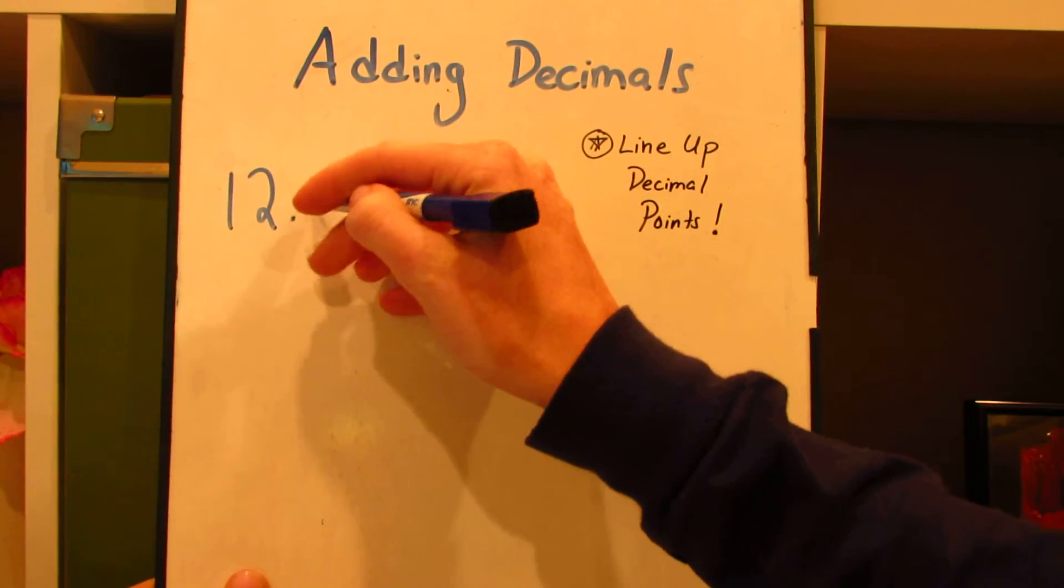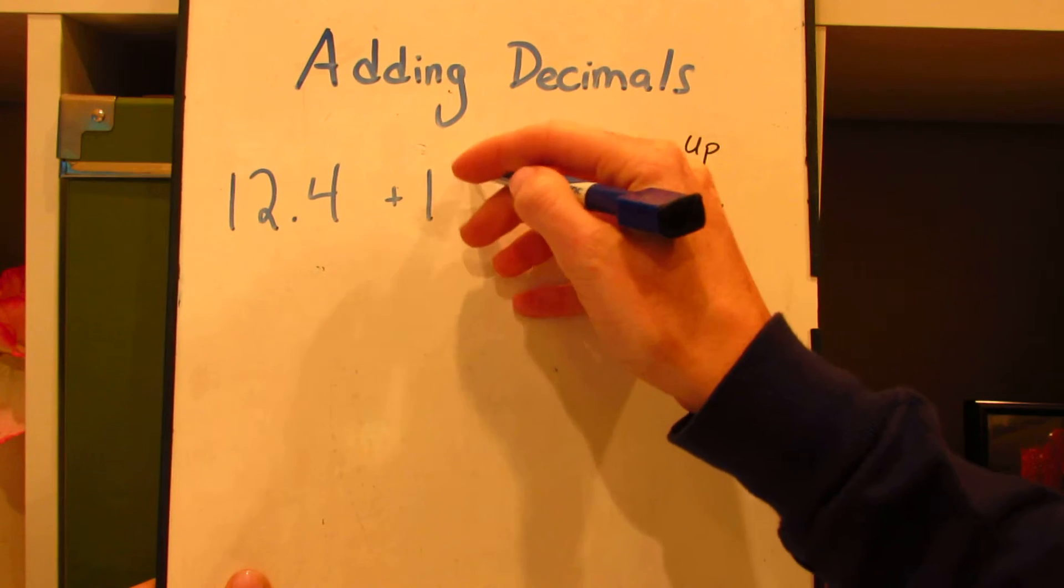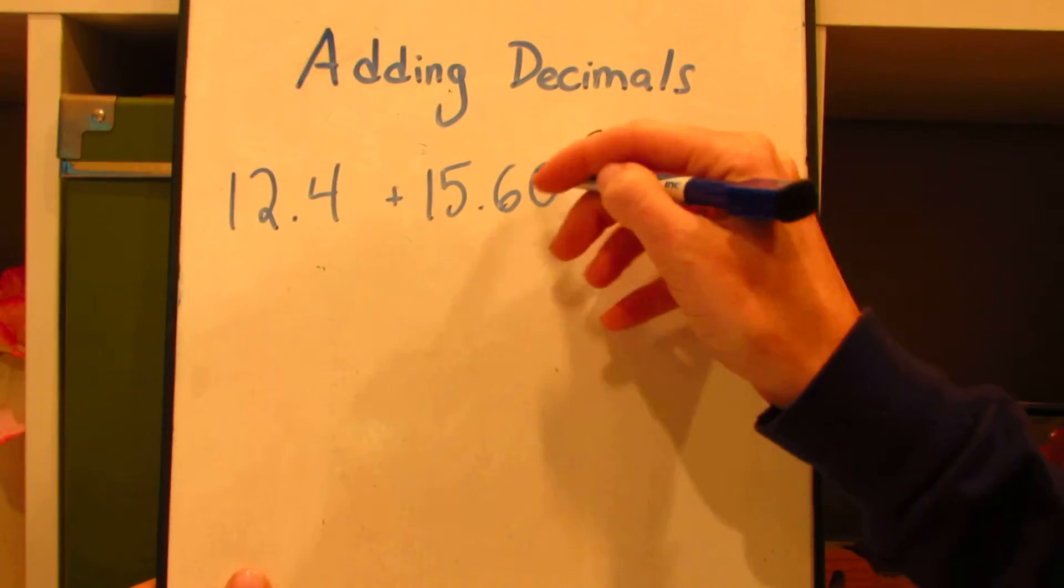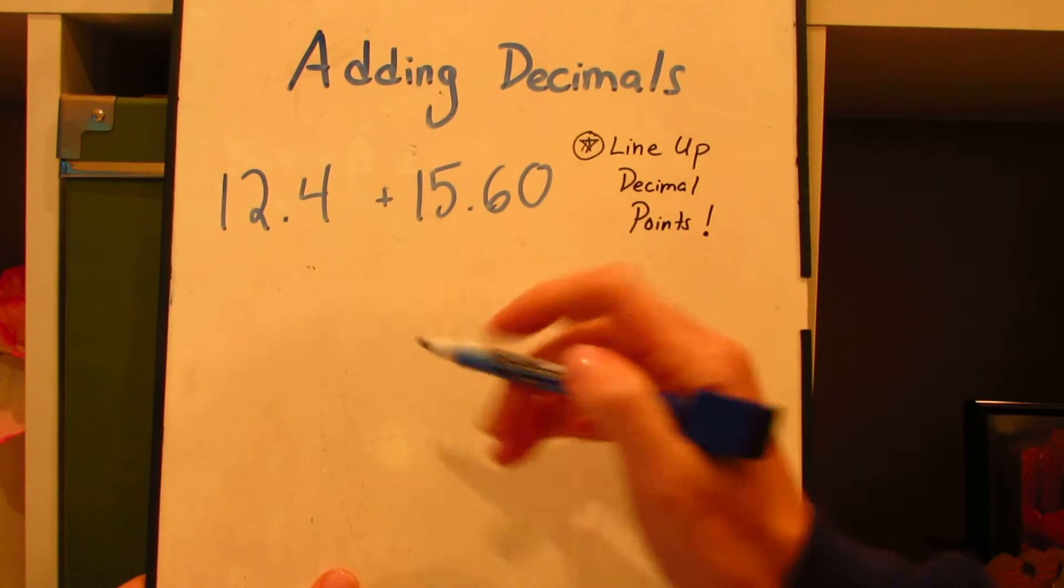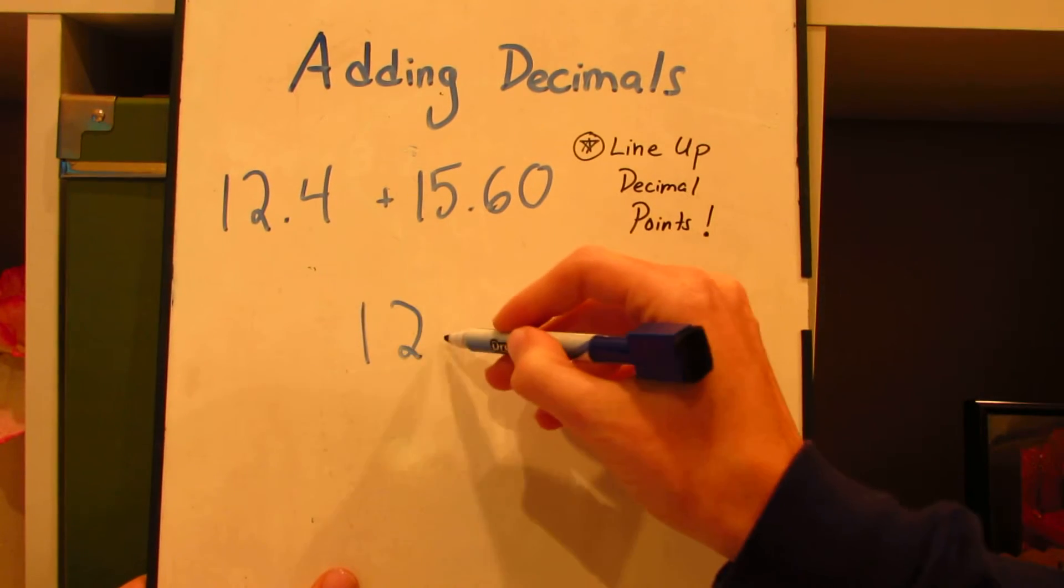12 and 4 tenths plus 15 and 60 hundredths. Again, really important when the decimals do not have the same number of place values is to line up the decimal points.